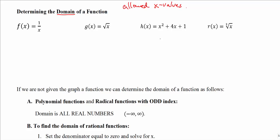There are a few reasons why an x value might not be allowed into a function. Our rule is that when we put a real number into a function, whatever real number goes in, it has to give us a real number out. So real number in for x, and we have to get a real number out as output for y.